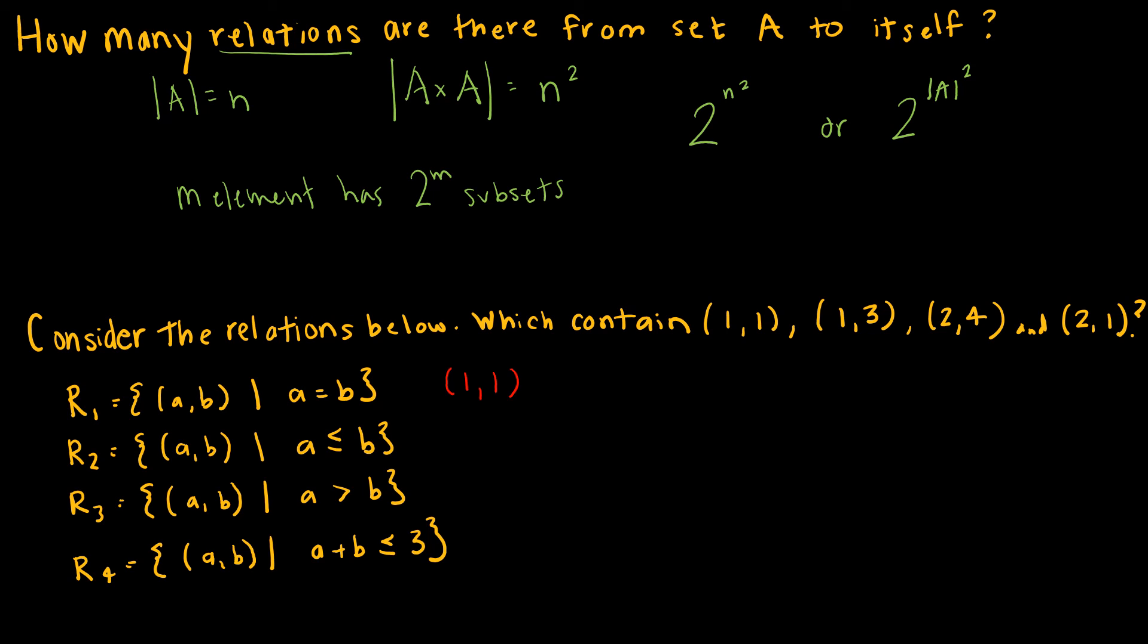For R2, R2 contains the ordered pairs AB such that A is less than or equal to, so that means 1, 1 would be included because 1 is equal to 1. 1, 3 would be included because 1 is less than 3. 2, 4 would be included because 2 is less than 4, but 2, 1 would not be included because 2 is not less than 1.